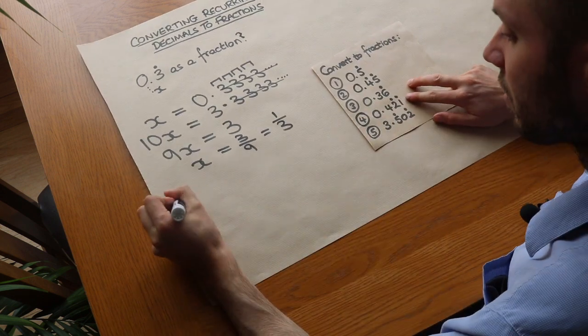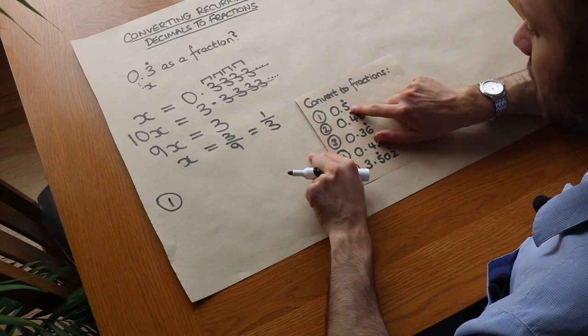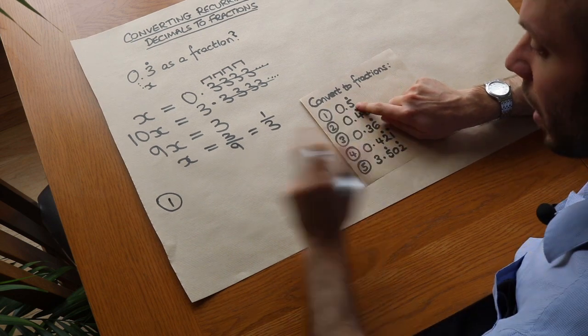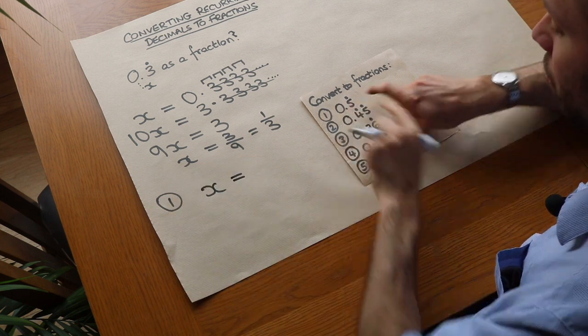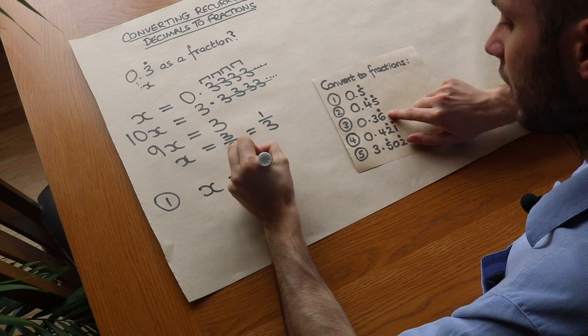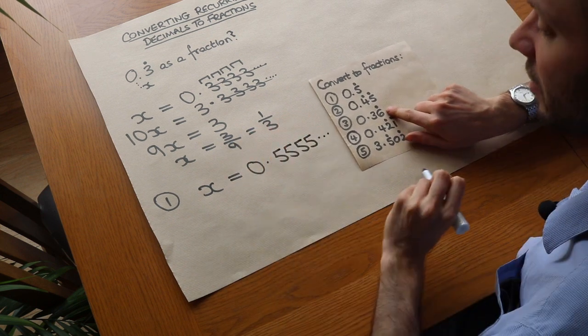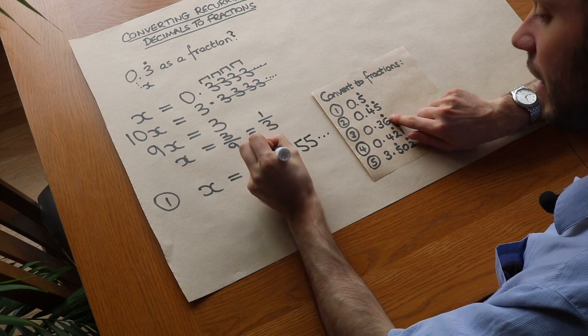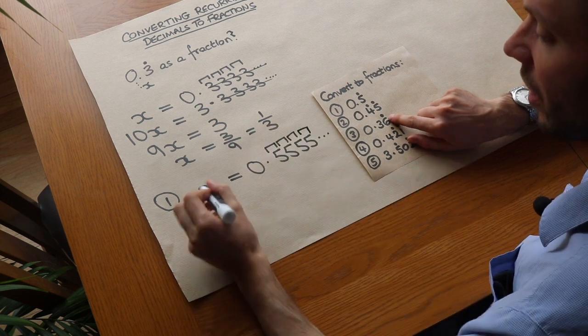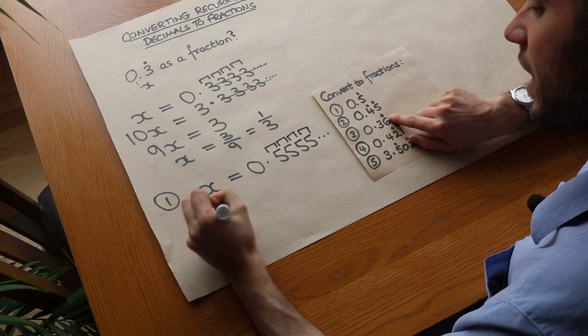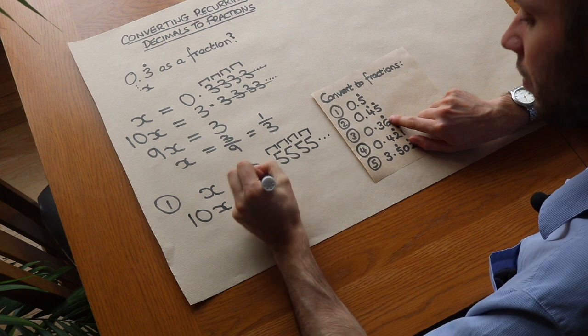Let's do some more examples. I've now got 0.5 recurring and I want to convert that to a fraction. So step 1 is write it as x and write out explicitly what 0.5 recurring means. So it's 0.5555. That will do in terms of number 5s. Then because the digits repeat every one digit we times both sides by 10. So 10x times that by 10 it moves the decimal point. 5.5555.